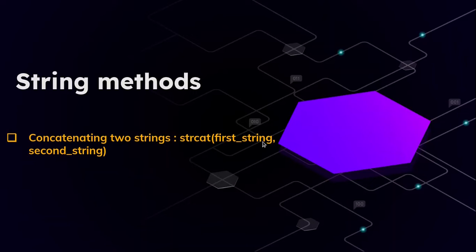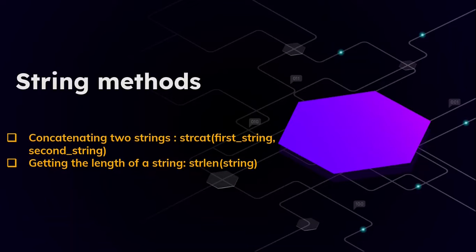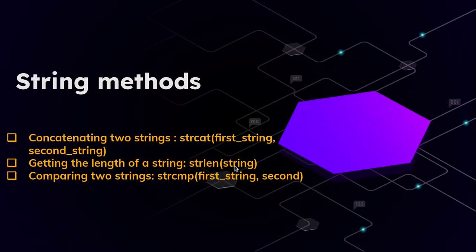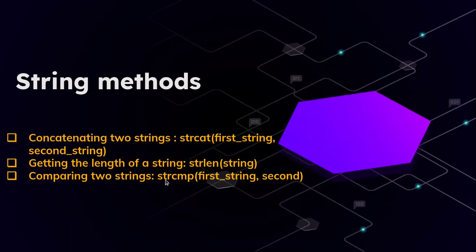The strcat function takes two parameters: the two strings you want to concatenate. We'll also discuss getting the length of a string using strlen, where again str is the first three characters. You provide the string you want to get the length of. Finally we'll cover comparing two strings using strcmp — they abbreviated 'compare' as cmp to keep the name short and simple.